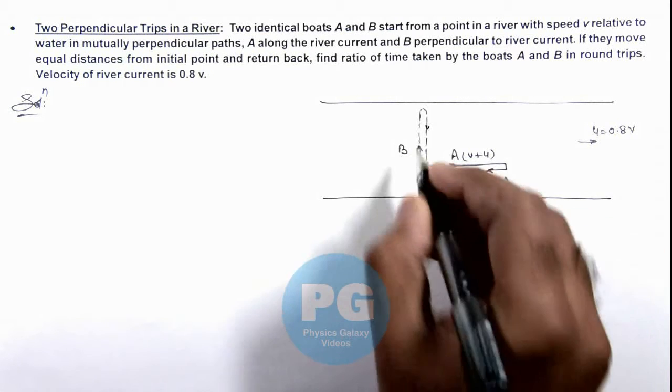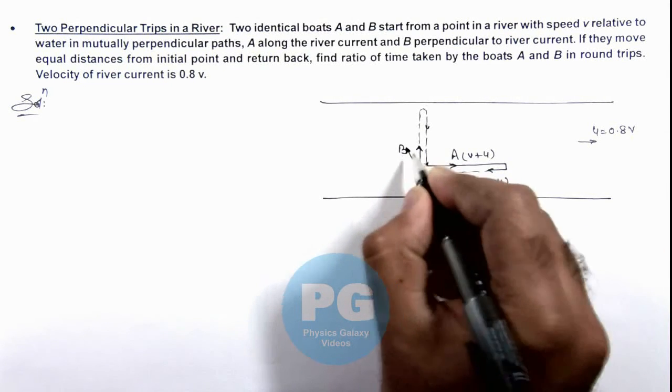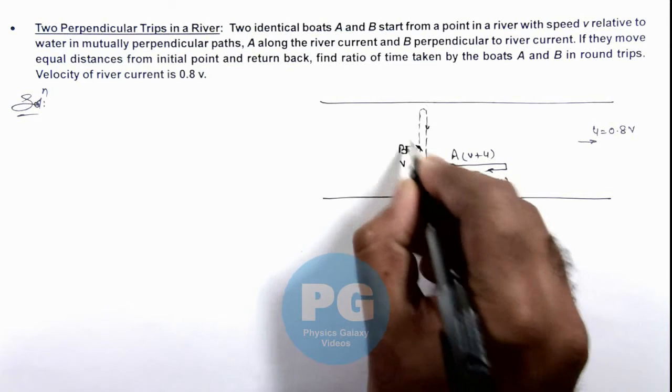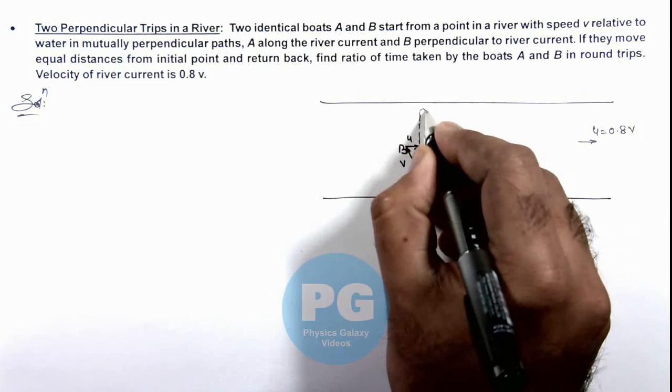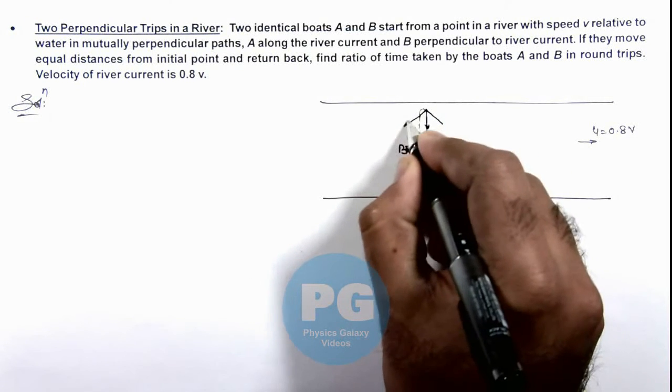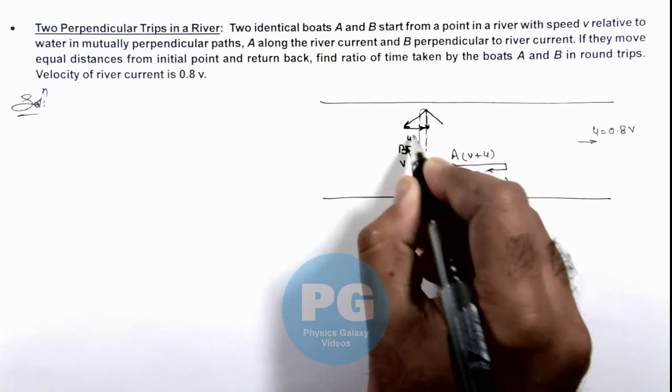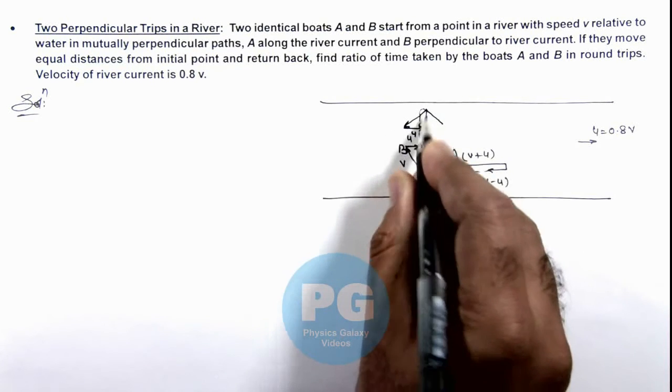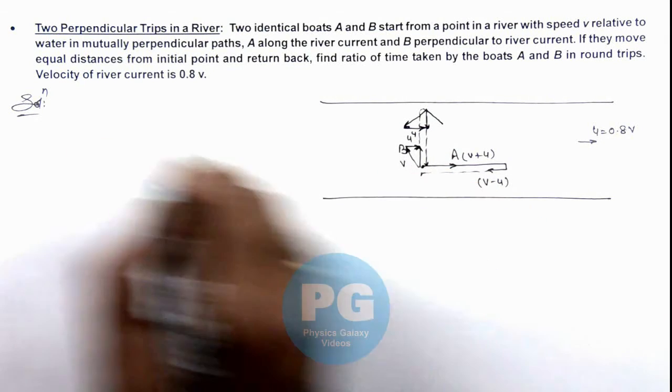So in this situation for going, it has to travel with the speed v in some direction so that when u is added the resultant path would be normal. Similarly when it is returning, its velocity would be somewhere here or you can say in this direction, so that when u will be added the resulting velocity will be in the direction normal to river current.